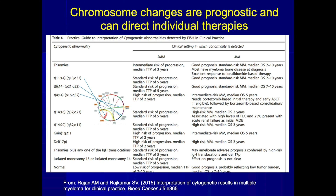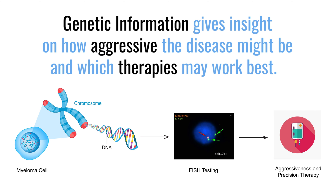Right now, just understanding chromosomal abnormalities gives us information about how aggressive a myeloma might be. A lot of these chromosomal translocations not only give us an idea of how aggressive the myeloma might be, but also which therapies might be best for individual translocations. So the genetic information gives us insight into how aggressive the disease might be and which therapies might be useful.